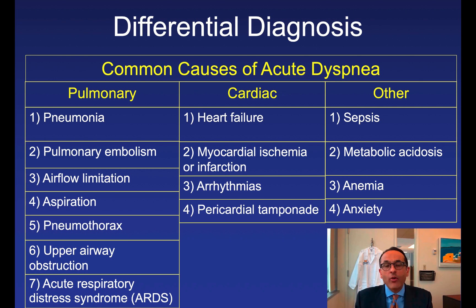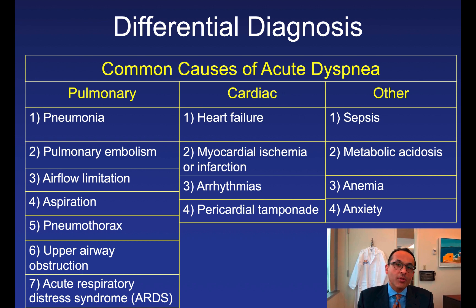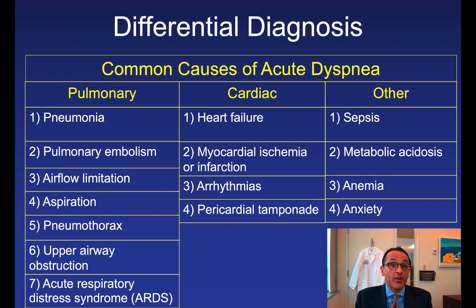The final category of common causes includes: sepsis, because patients develop lactic acidosis and the compensation is respiratory alkalosis or hyperventilation — when patients breathe quickly they often feel short of breath; metabolic acidosis of any type, non-gap or gap, because again the compensation is respiratory alkalosis; anemia, due to low oxygen-carrying capacity; and anxiety, which is a diagnosis of exclusion. Patients with pulmonary embolism, congestive heart failure, or decompensated myocardial infarction look like they're having a panic attack — they look anxious because they're near death, so the anxiety is secondary, not primary.